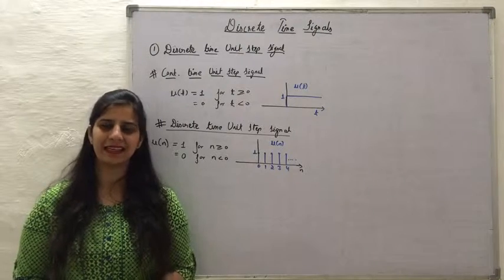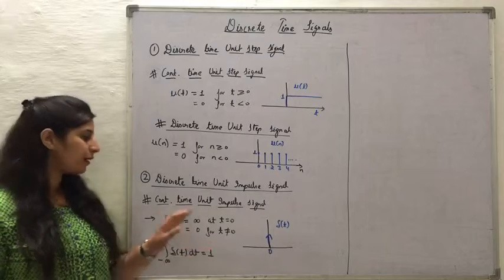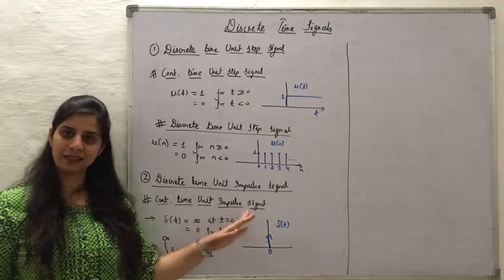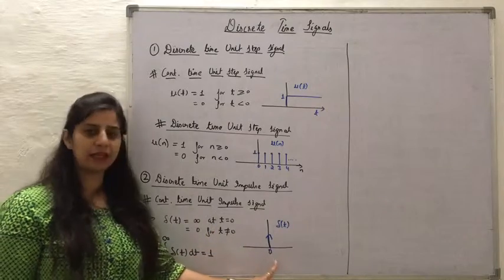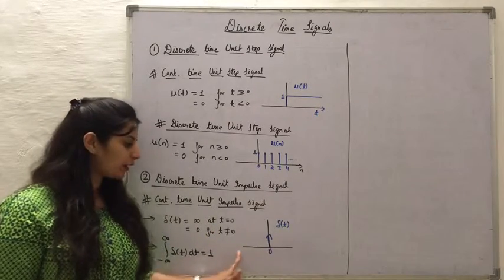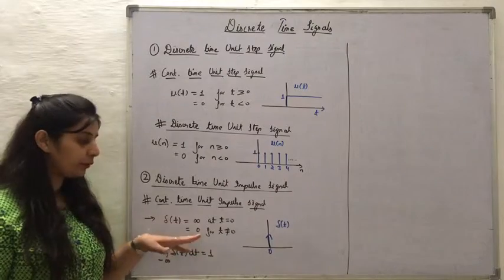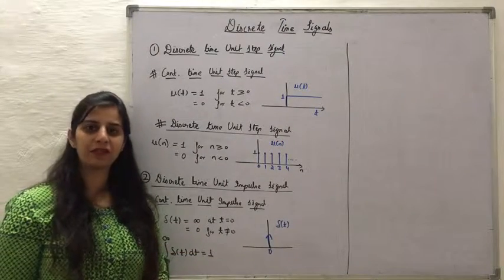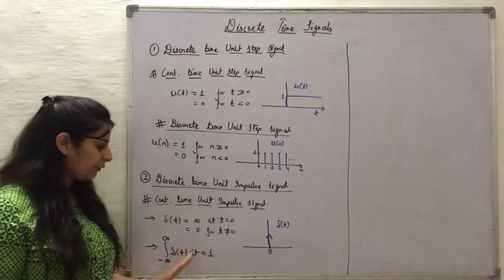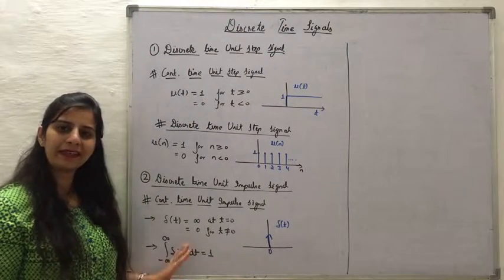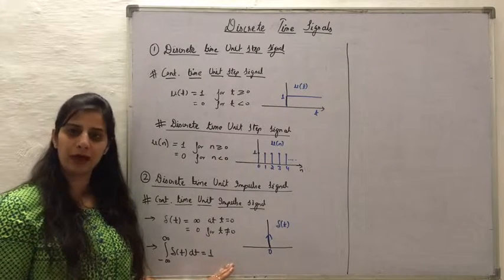For the continuous time unit impulse signal, the value was infinite at t equals 0 and 0 for all other time values. An important property was that integrating over the complete time interval yielded a value of 1.